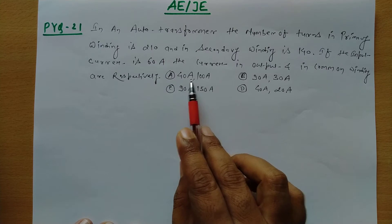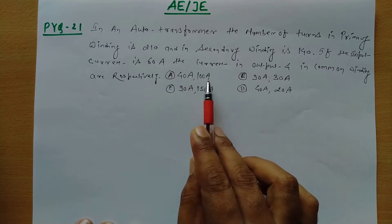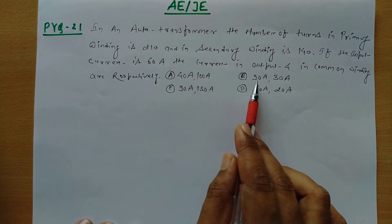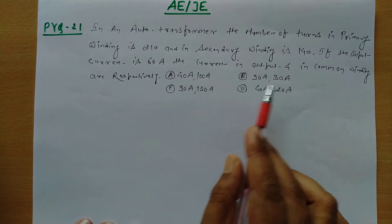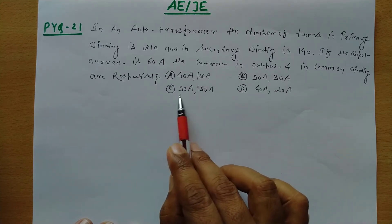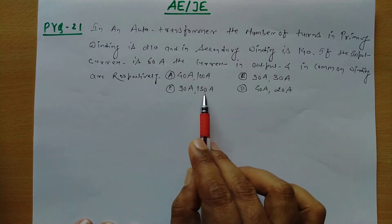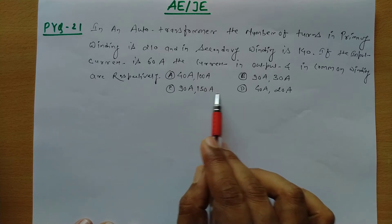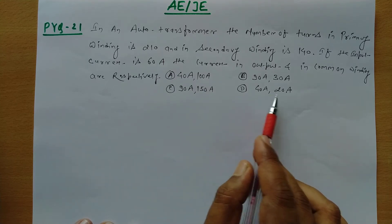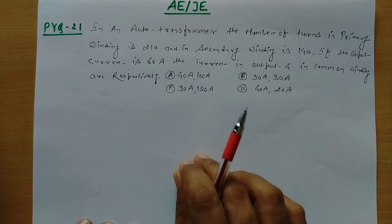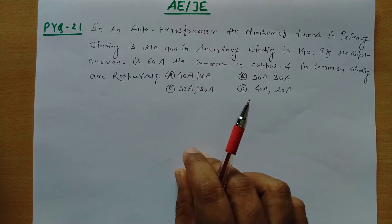Option A: 40 ampere, 100 ampere. Option B: 90 ampere, 30 ampere. Option C: 90 ampere, 150 ampere. Option D: 40 ampere and 20 ampere.